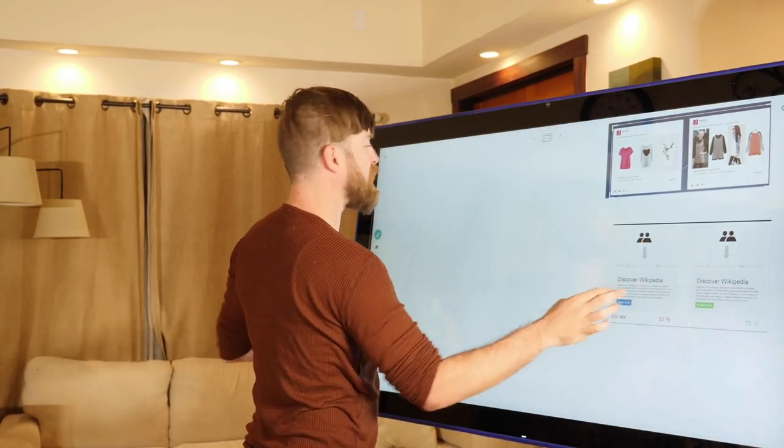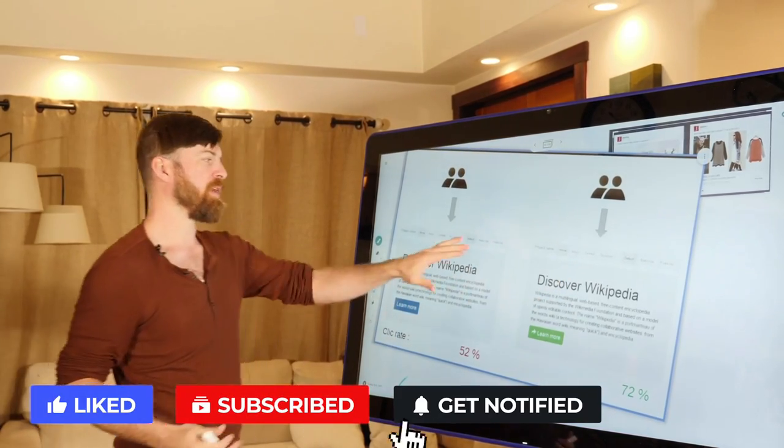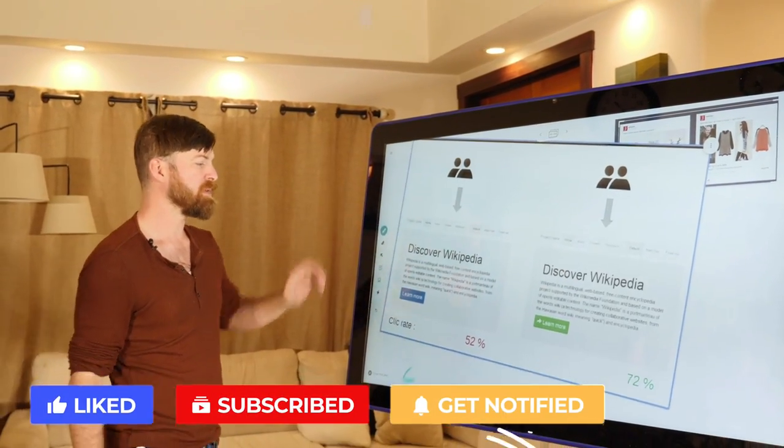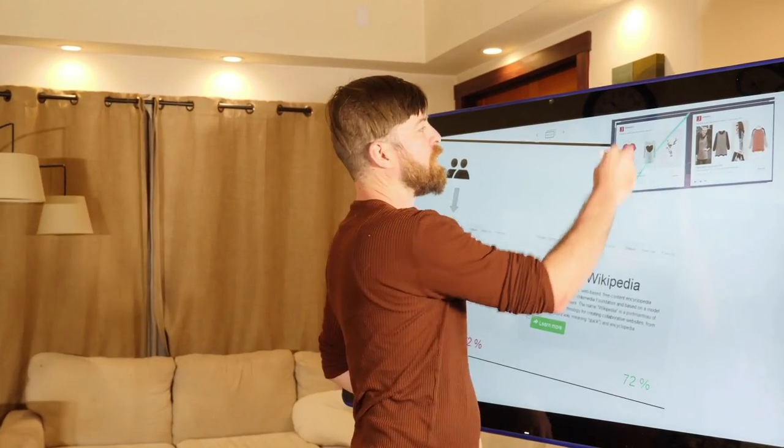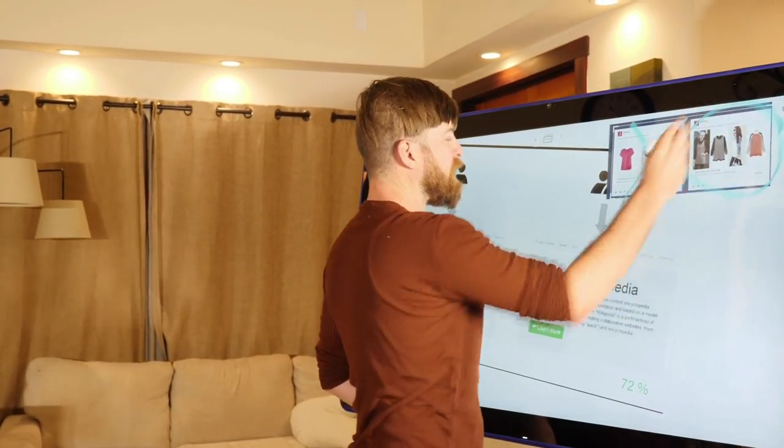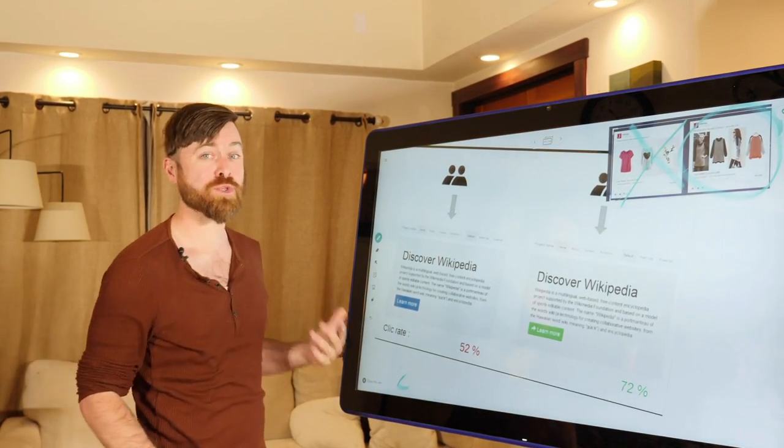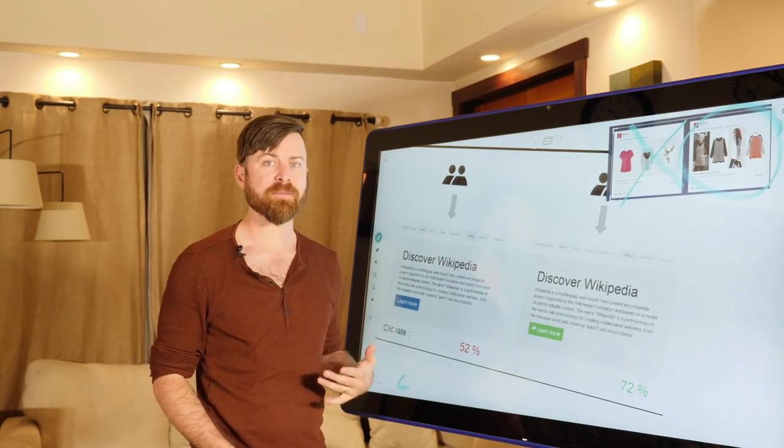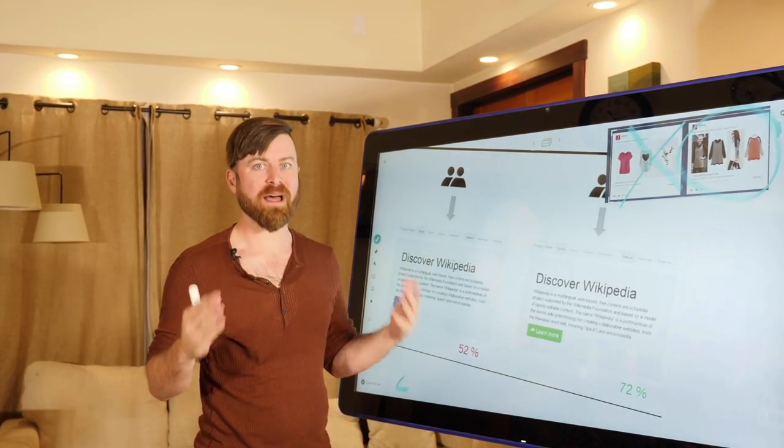Now another example is what I just showed you right here which is the Wikipedia example, where they were testing out two different buttons. Once again, you test out your ads first and optimize. Get rid of the bad stuff and go with the good stuff. And you can do that with your web pages as well. And this is what I teach in my six-week course called the super affiliate system. We have tons of successful students making their first sales online. Check it out.